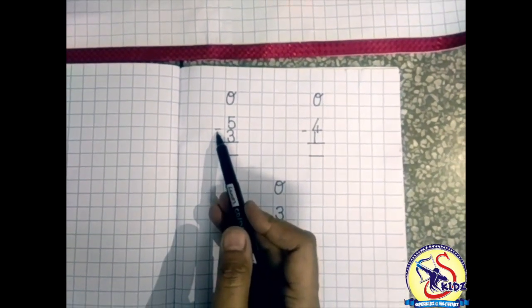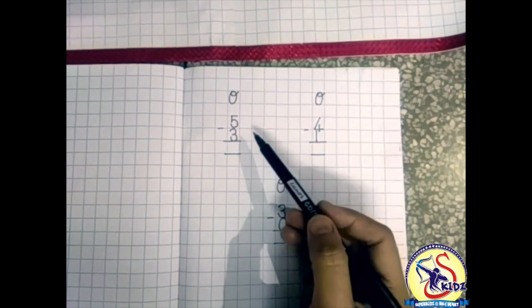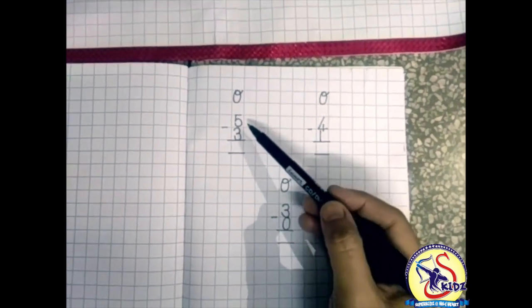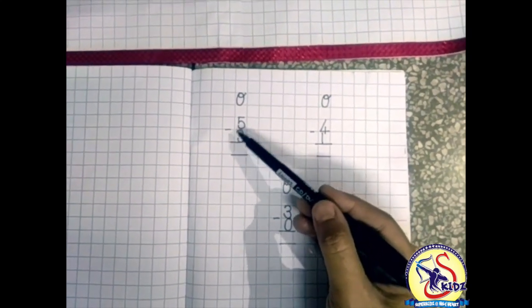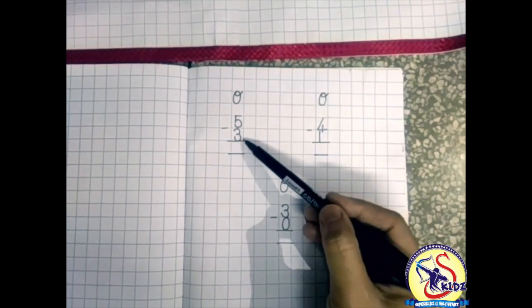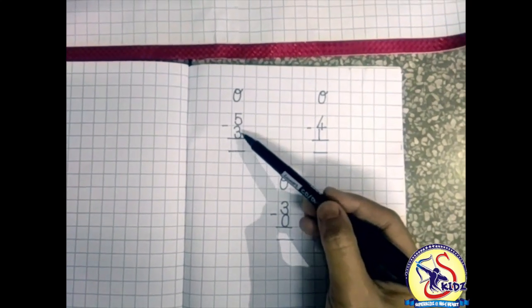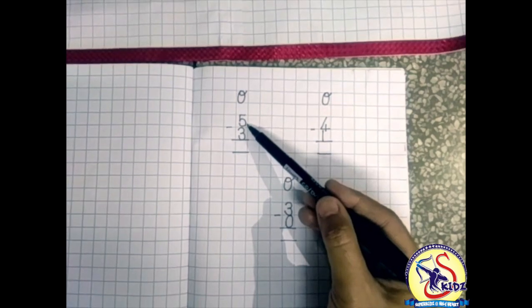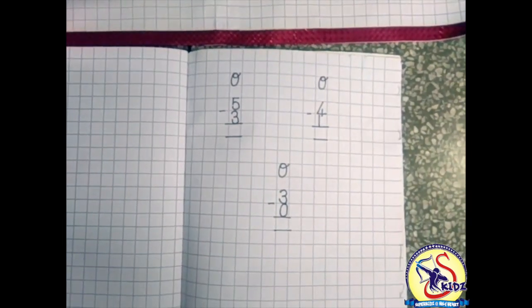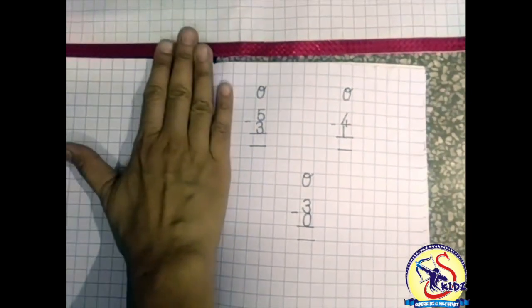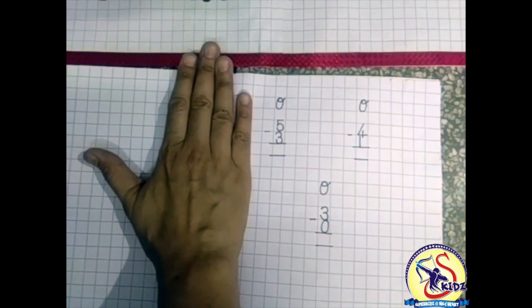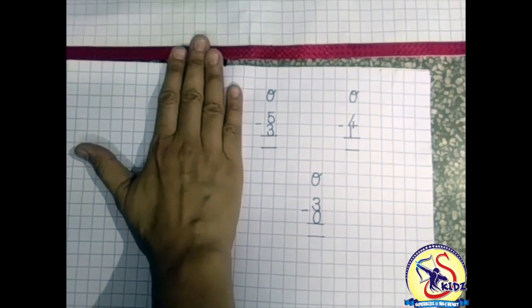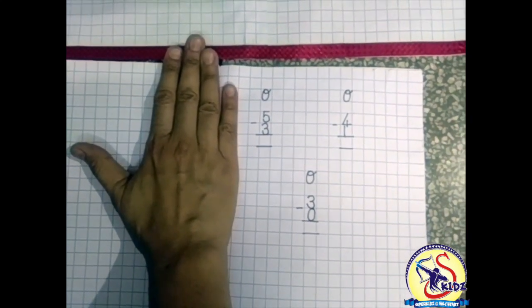Now what we have to do: the number is five minus three. So what we have to do? First number is five, so we will take out five fingers. Now the next number is three, so three fingers down.